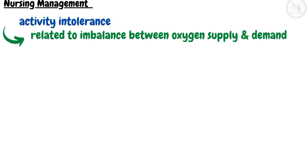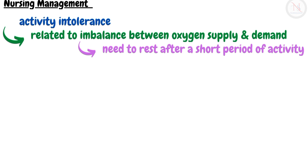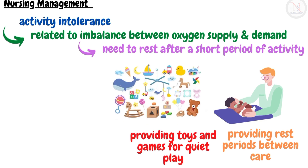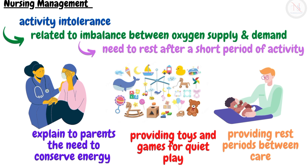The second nursing diagnosis is activity intolerance related to an imbalance between oxygen supply and demand, as evidenced by the need to rest after a short period of activity. Nursing interventions include providing rest periods between care, providing toys and games for quiet play, and explaining to parents the need to conserve energy and increase rest.